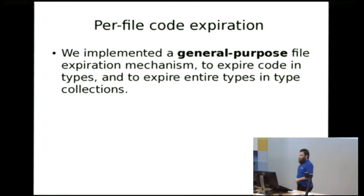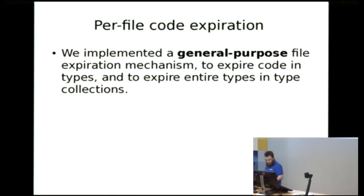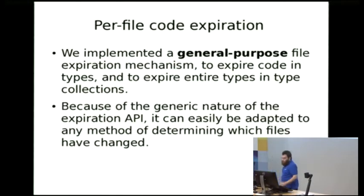So we implemented a general purpose file expiration mechanism that does just that. There's a bit of it in the code for a type to remove bits of code and there's more code in the type collection to remove entire types. And it actually worked out that we could do this without changing too many of Puppet's internal APIs because each bit of code already has associated with it file and line information. So we could just use that information to associate each bit of code and each type with a file and expire those as necessary. Because of the generic nature of the expiration API, this actually has nothing to do with iNotify yet. This could be hooked into any external source of file changes or even a file polling API or something.